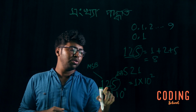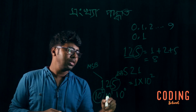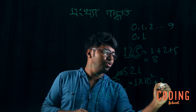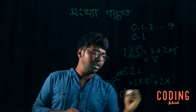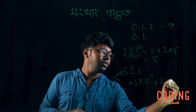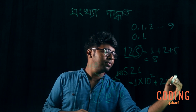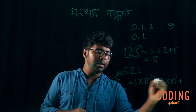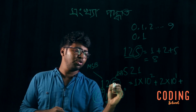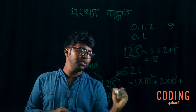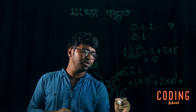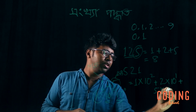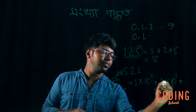The other digit was 2. And this is 2 into 1. The other digit is 5. This is 10 to the power 0. So, 5 into 10 to the power 0.